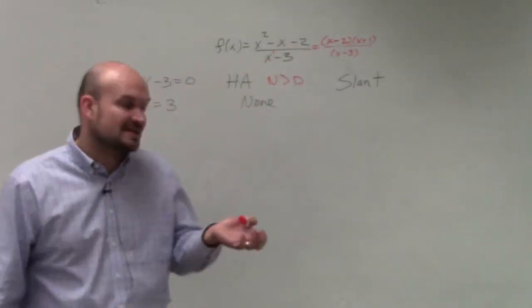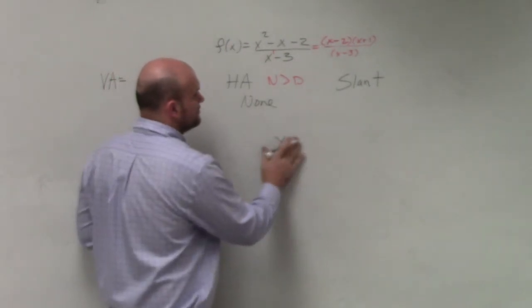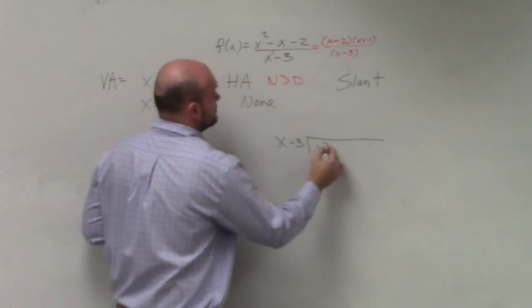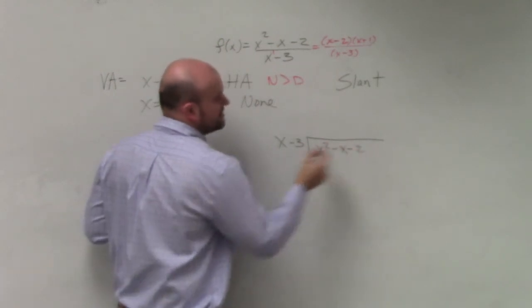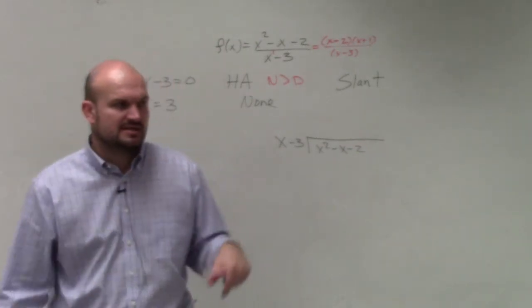Since there's no horizontal asymptote, we're going to find a slant asymptote. All you need to do to find the slant asymptote is use long division. In this case, yes, we could do synthetic division, but I want to go over long division again to make sure we're on the same page.